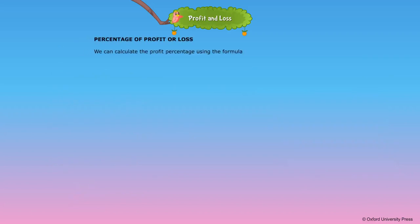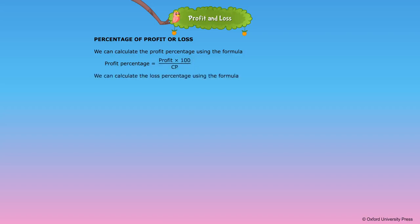Percentage of profit or loss: Profit percentage = (Profit × 100) ÷ CP. Loss percentage = (Loss × 100) ÷ CP.